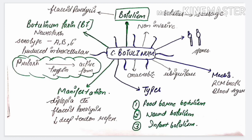Wound botulism occurs due to contamination of a wound with Clostridium botulinum spores. Infant botulism mostly results from ingestion of contaminated food, particularly honey. If honey containing botulinum spores is fed to infants, the child can develop botulism — this is called infant botulism.